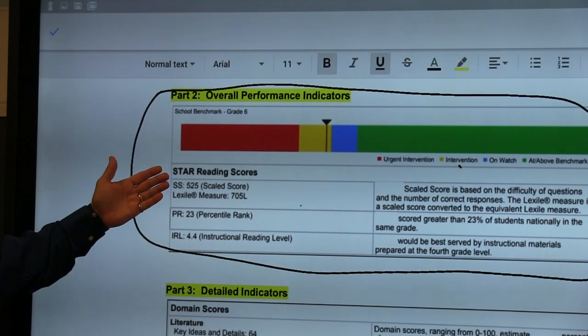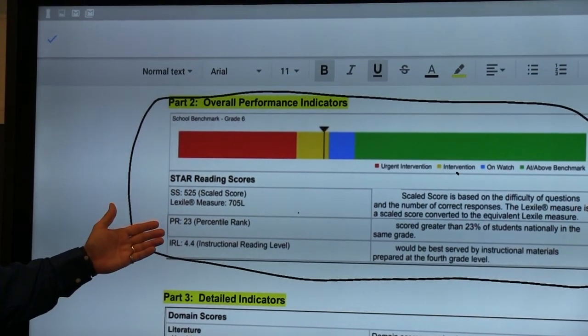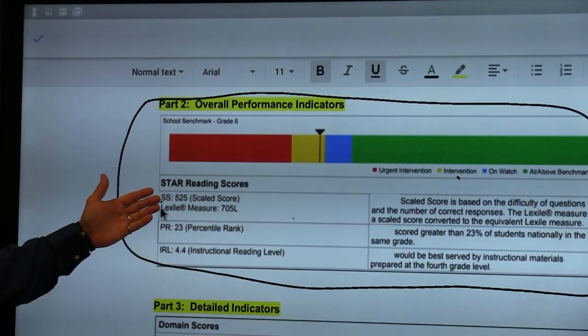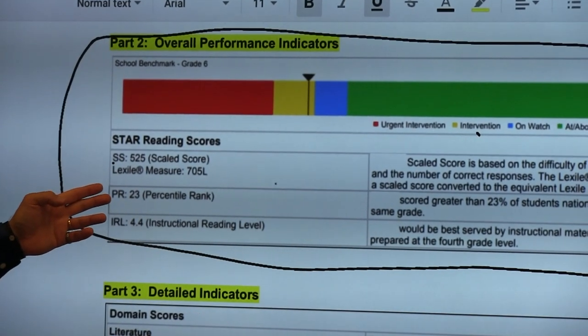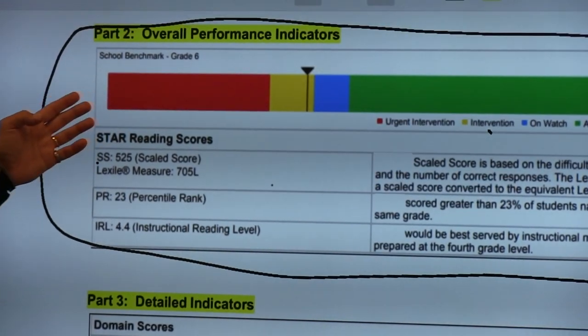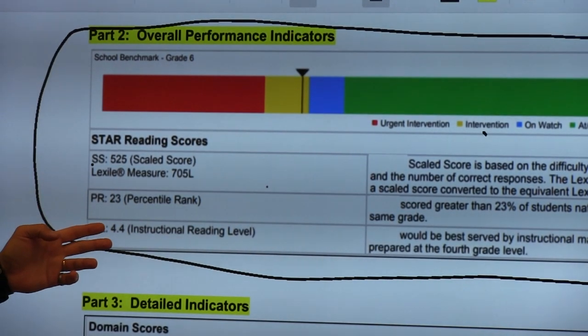In this particular section you're going to have three different subcategories. One is the scaled score with an appropriate Lexile level, a percentile rank which is the rank that tells us where they lie within these four categories and also instructional reading level.